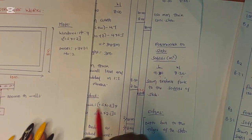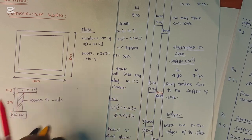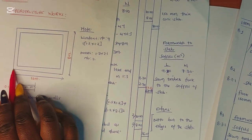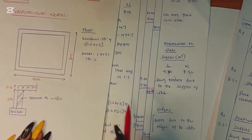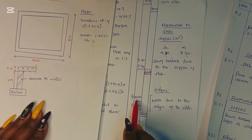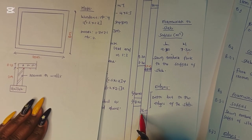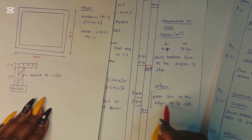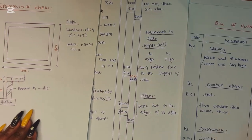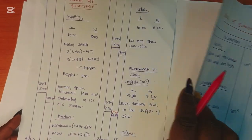Now let's get the formwork to the edges — these are the sides that support the concrete. The edges run along the entire length and the entire width, so that is 10.00 multiplied by 2 and 8.00 multiplied by 2. That gives 20 plus 16, which totals 36 linear meters for the formwork to the edges of the slab. Now that we have all the quantities, we are going to prepare the BoQ.